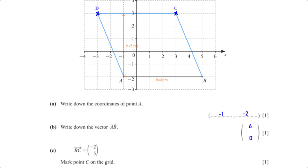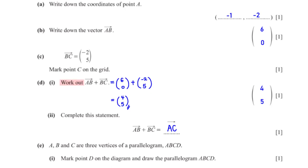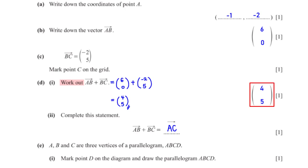Vector BC is (negative 2, 5). Mark point C on the grid. Vector BC tells us to move 2 units to the left and 5 units upwards from B. Work out AB plus BC. We found AB to be (6, 0) and BC is (negative 2, 5). Adding corresponding elements: 6 plus negative 2 is 4, and 0 plus 5 is 5. So the result is (4, 5).